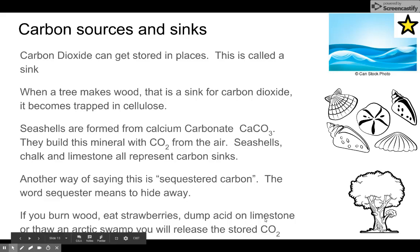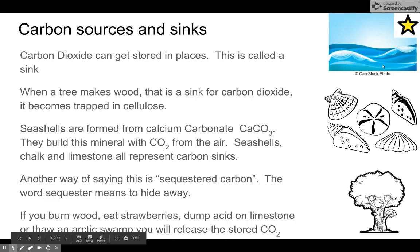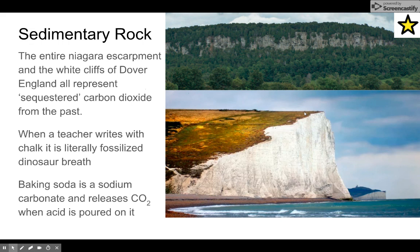Acid on limestone — you did this as a chemistry experiment as a child; baking soda and vinegar is basically the same effect. These things have stored away an awful lot of carbon dioxide in Earth's history, because our atmosphere was once primarily carbon dioxide. The entire Niagara Escarpment in the Orangeville area, stretching from Niagara Falls to Tobermory, and the limestone cliffs and chalk of the White Cliffs of Dover are all ancient CO2 that seashells built into rock.